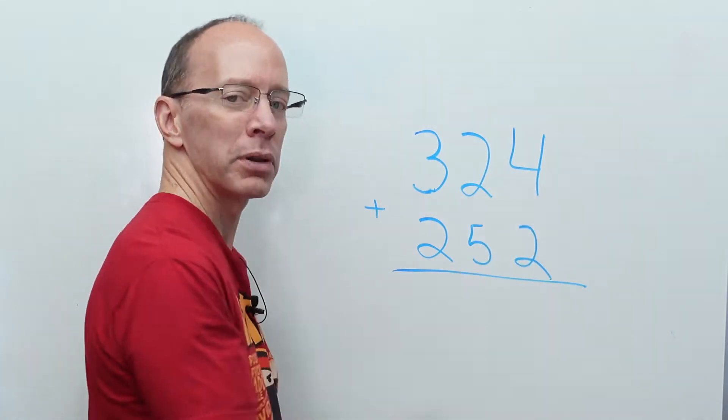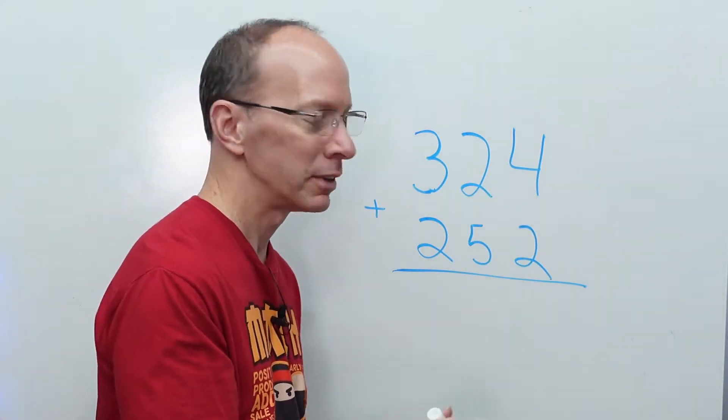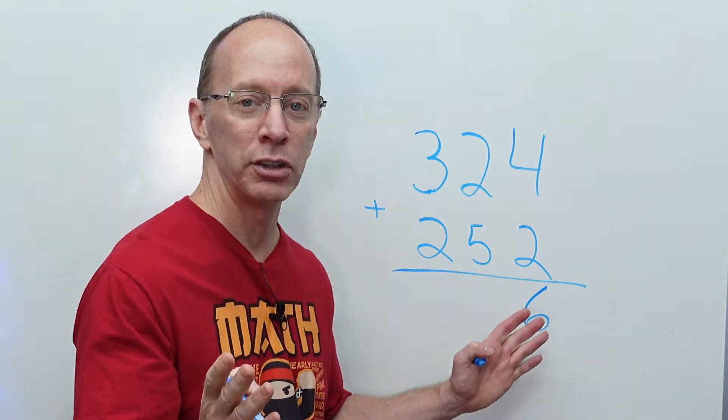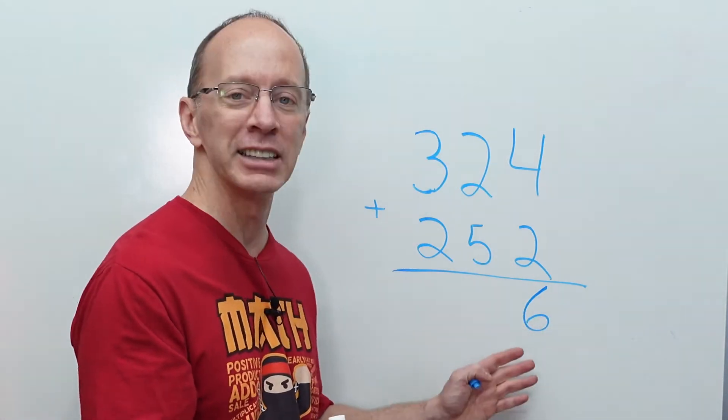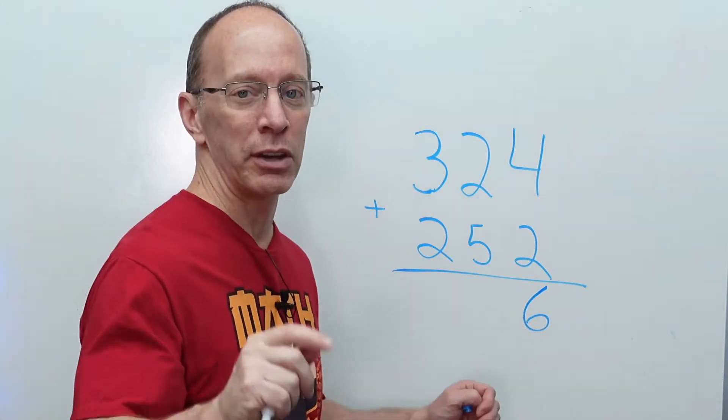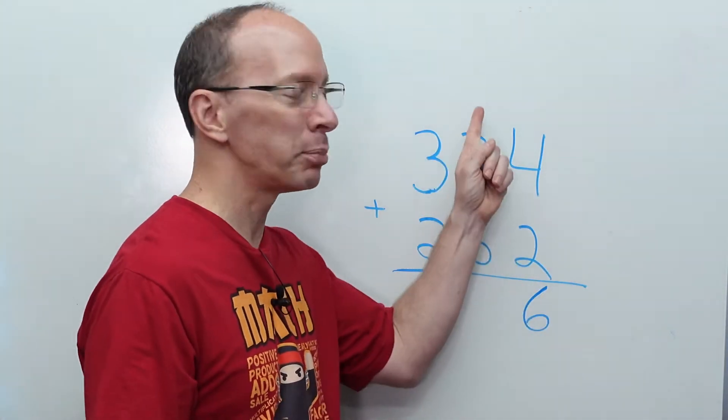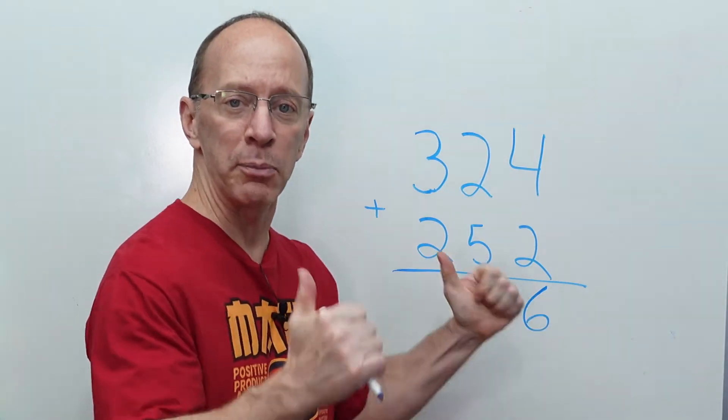All right, 4 plus 2. Do you know what that is? Yeah, that is 6. Now, we do not have to do any regrouping because that is not a double-digit number. If it was a 10 or above, then we would have to regroup. But we don't have to put anything in there. Let's keep working.